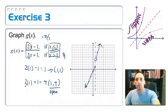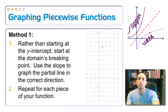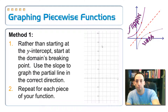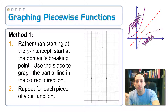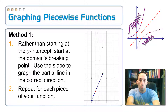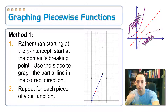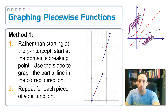Let me review two different methods for graphing a piecewise function. Method one: instead of starting at the y-intercept, start at the domain's breaking point. For the previous example, that was x equals one. Then use the slope to graph another point, making sure you go in the proper direction — whether that's greater than or less than one. So I start right there at one, and since it was less than one, I use slope negative 2: down 2, left 1, down 2, left 1. Then repeat that for each part of the piecewise function.